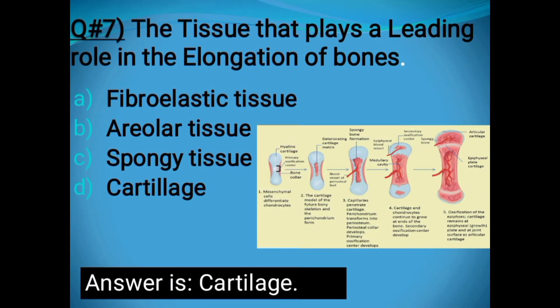Question number seven: Which tissue plays a leading role in the elongation of bones? Options: Fibro-elastic tissue, Areolar tissue, Spongy tissue, or Cartilage. The correct answer is Cartilage.